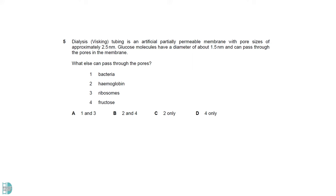Fructose is a monosaccharide just like glucose. So it can certainly pass through the pores in the membrane. The other three options are either an organism, a protein, or an organelle, which is composed of way more atoms compared to glucose and fructose. So their sizes are very much larger and would not be able to pass through the pores.